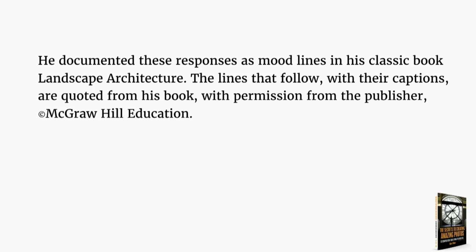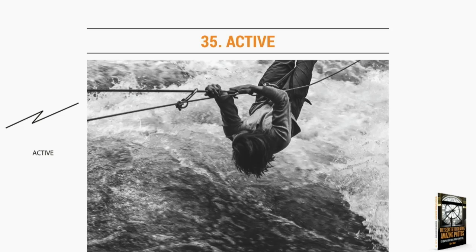He documented these in his book, and he actually drew lines in it. I got permission from the publisher, McGraw-Hill Education, to use them. This is a mood of active — the drawing is his drawing, the photograph is mine. He said if you want to get the feeling of somebody being active, use a mood line that looks like that. This is a kid crossing a pretty intense raging river on a rope at mountaineering school. It has that feeling of activity — it's definitely not passive. The water rushing gives you that feeling too, but there's a feeling of tension and activity that comes from the mood line itself.